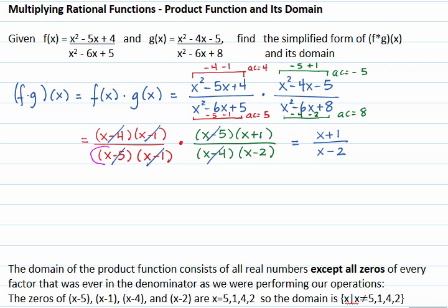The factored form of all of our denominators includes the factors x minus 5, x minus 1, x minus 4, and x minus 2.